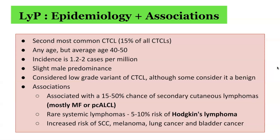Because of overlapping clinical and histological features between lymphomatoid papulosis and cutaneous anaplastic large cell lymphoma — such as the presence of an aberrant T-cell phenotype, clonally rearranged T-cell receptor genes in 60 to 70% of patients, and identical T-cell clones in LYP lesions and associated lymphoma lesions — lymphomatoid papulosis is best regarded as a low-grade variant of cutaneous T-cell lymphoma. It also has associations including a 15 to 50% chance of secondary cutaneous lymphomas, mostly mycosis fungoides and primary cutaneous anaplastic large cell lymphoma.